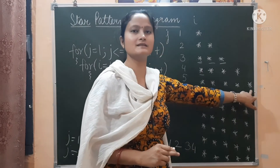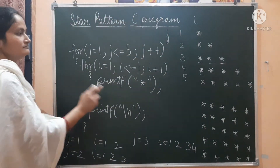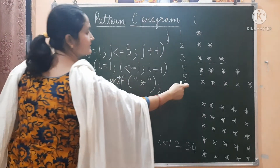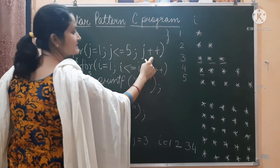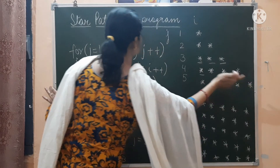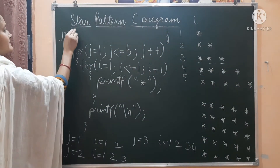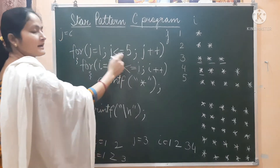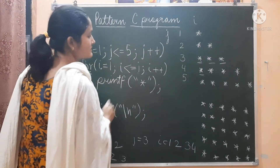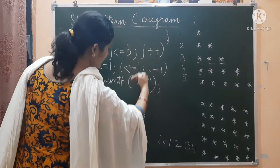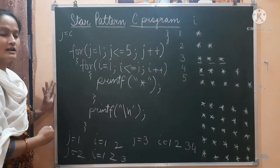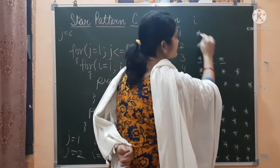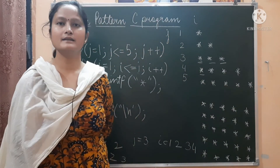Similarly it will continue up to the fifth row and print the final stars. After executing row 5, the value of J is incremented to 6. Is 6 less than or equals to 5? Condition gets false, so those lines will not be executed. Your program will end and you will get this complete star pattern in C language.